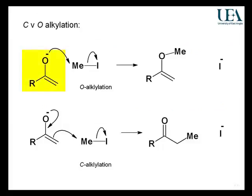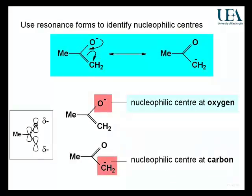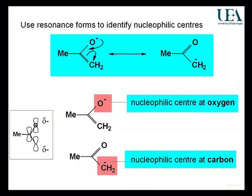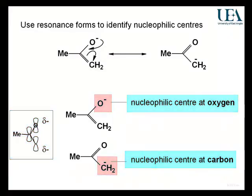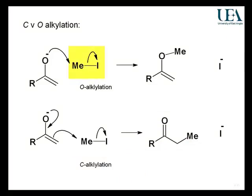In a simple enolate with a simple electrophile, there are two centres of reactivity. The resonance analysis indicates that there is an oxygen nucleophilic centre and a carbon nucleophilic centre. So we have a competition between two nucleophilic centres, and they're going to react with electrophiles. I want to pick a simple electrophile to start this process off.